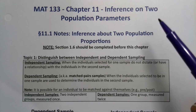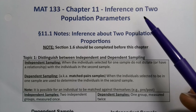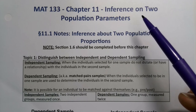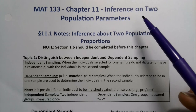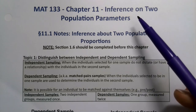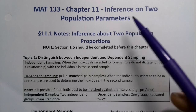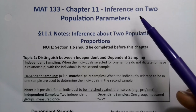In chapter 11, we're going to move away from inference on a single population parameter into inference on two population parameters. That means we're going to be making confidence intervals, sample size calculations, and hypothesis tests, but on two groups instead of a single group like we were doing in chapters 9 and 10.